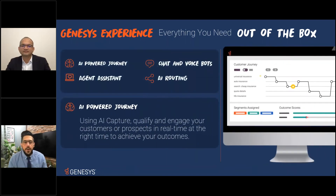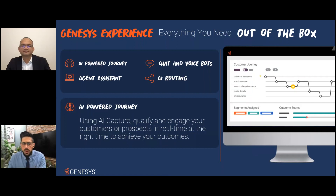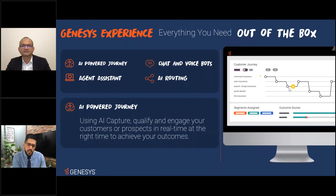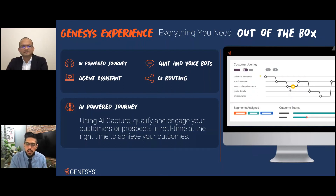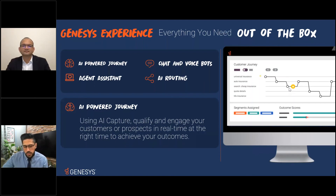We have something called AI-Powered Journey, or Predictive Engagement. In short, it allows your website — whether you're retail, telco, or selling any product — to tell you in real time what your customer is doing. Using AI, Genesys can see which page the customer is on, how long they've spent there, and calculate the probability of them converting. If that probability falls below a specific threshold, the system can proactively engage them with a pop-up to chat with an agent or present an offer, ensuring your prospects are converting.